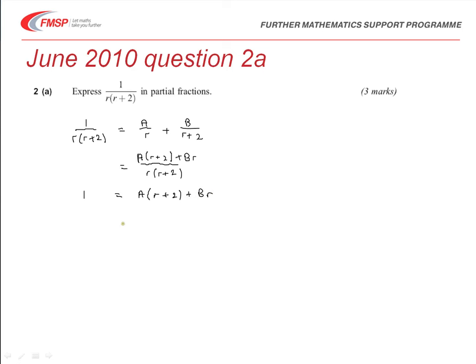Now in order to find A and B, you know you can, if it's true for all values of r, then it's true for specific values of r. So if we let r equal 0,